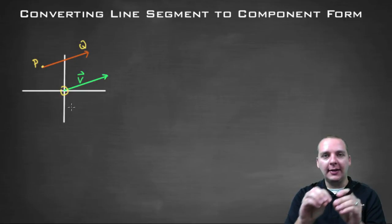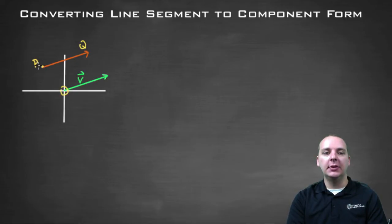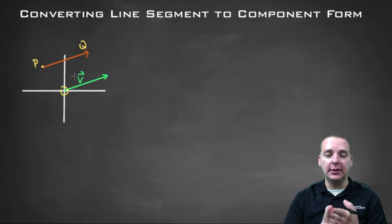So you want to move that line segment down to where its initial point is starting at the origin, but you want it to have the same direction as your line segment and you want it to have the same magnitude or length as your line segment.